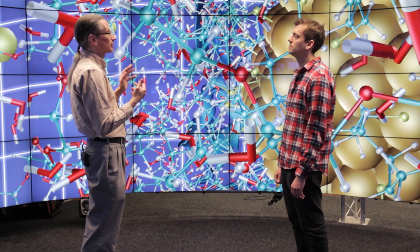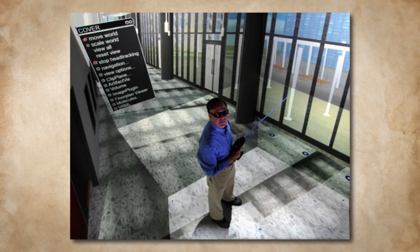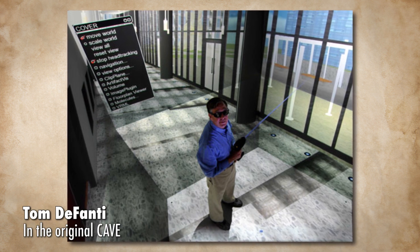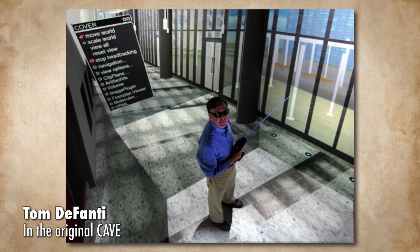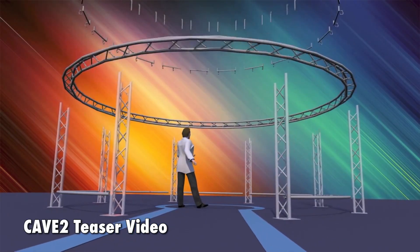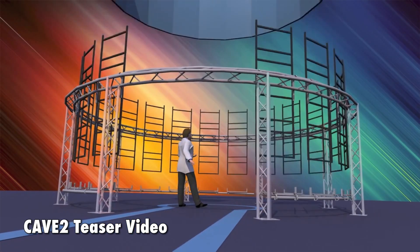The first generation of Cave in the early 90s used flat walls and rear projection to create a responsive 3D environment. Obviously, things have advanced quite a bit since then. So when Cave 2 was built, they ditched rear projection in favor of current technology.